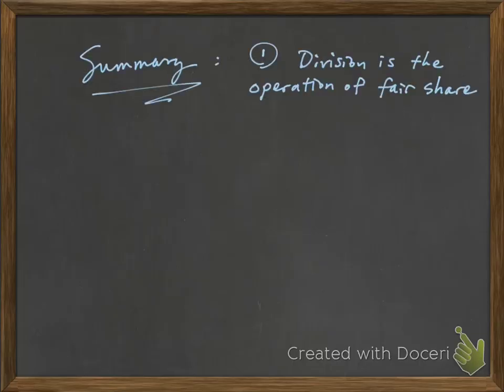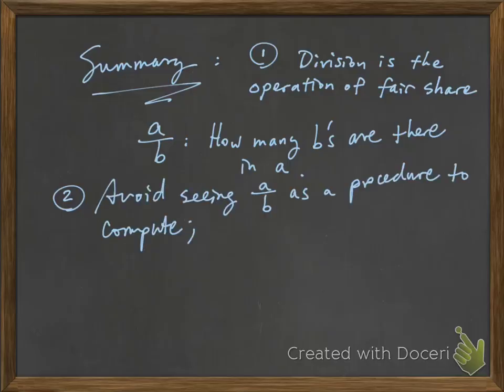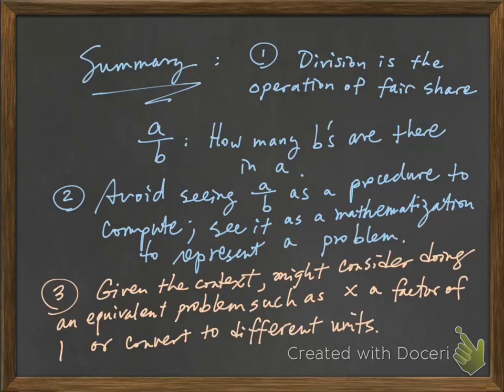To summarize this video, first, we discussed that division is the operation of fair share. We used the expression a divided by b to answer how many b's there are in a. Second, this is kind of hinted but not explicitly spoken. You want to avoid seeing the expression a divided by b as a procedure to compute, but rather see it as a mathematization to represent a problem. Number three, we do mathematics because we care about a problem. So given the context, you might want to consider doing a similar problem by applying further operations, such as multiplying by a factor of 1, or to convert the problem into different units. Well, this concludes our discussion on division.